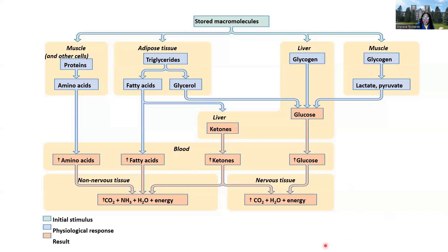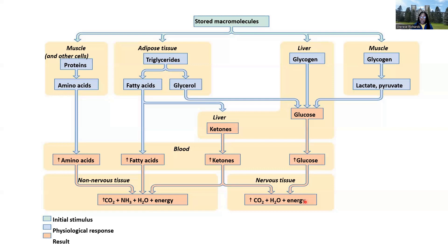Nervous tissue prefers glucose and as a second preference will take ketones, but it cannot use amino acids or fatty acids directly. Fatty acids can be converted into ketones, which can then be used for energy. If we have zero glucose coming in and the body shifts into a ketotic state or ketosis, we take those fatty acids, make ketones, and the brain can use them.